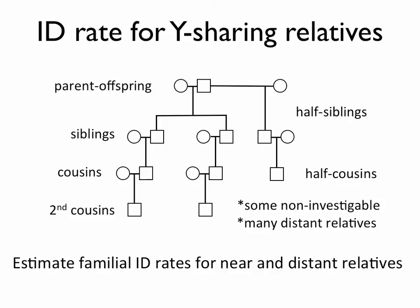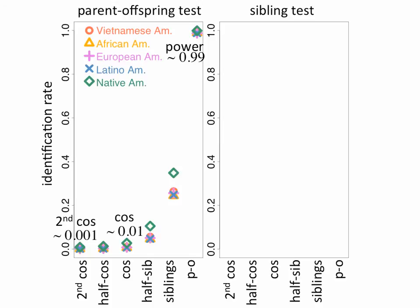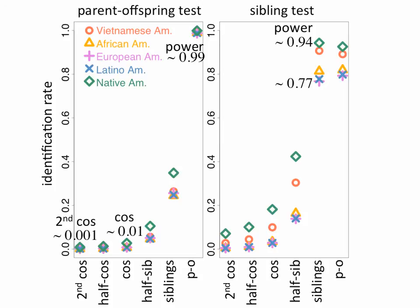I'm going to show you the identification rates I estimated for the parent-offspring test on the left and the sibling test on the right for a number of different true relationships and population groups. In the parent-offspring test, power to identify true parent-offspring relationships is high at about 99%. When we look at more distant relatives, we see non-zero genetic identification rates — specifically, about 1 in 100 times cousins will be identified as parent-offspring, and about 1 in 1,000 times second cousins will be identified as parent-offspring. In the sibling test, we see similar high power at 77% to 94%; however, again, we see distant relatives being misidentified as siblings. About 14% to 42% of half-siblings and 1% to 10% of half-cousins will be called siblings.